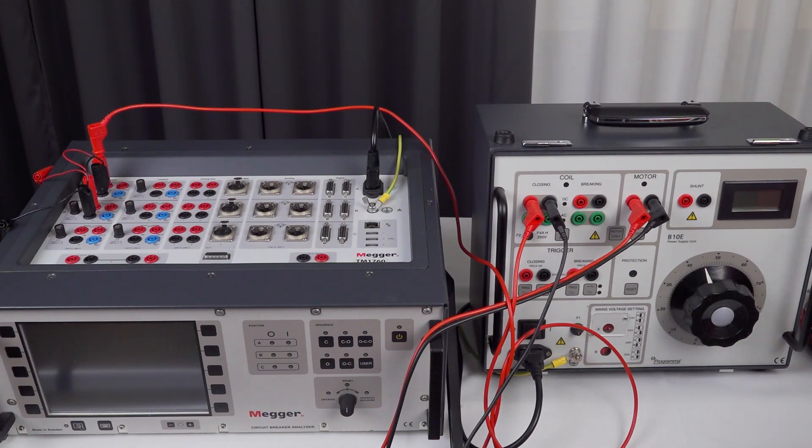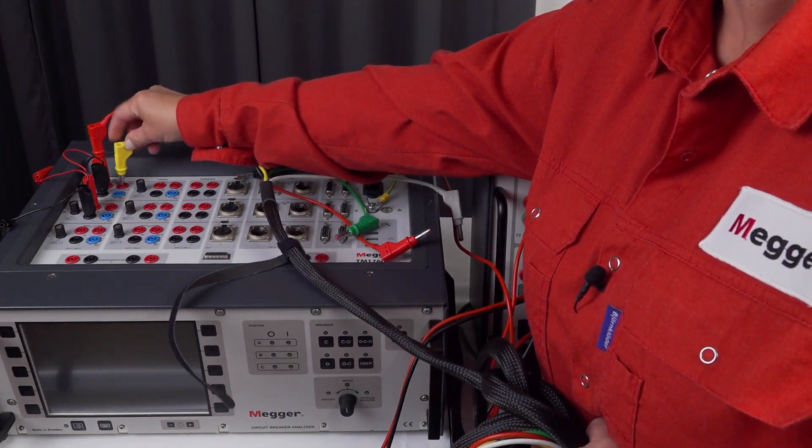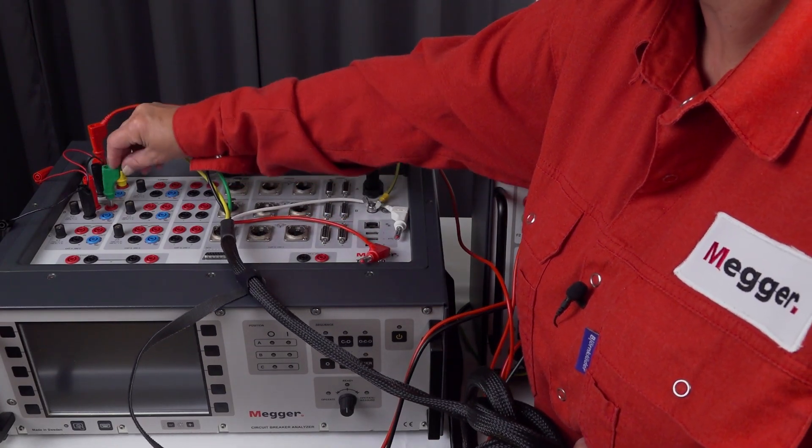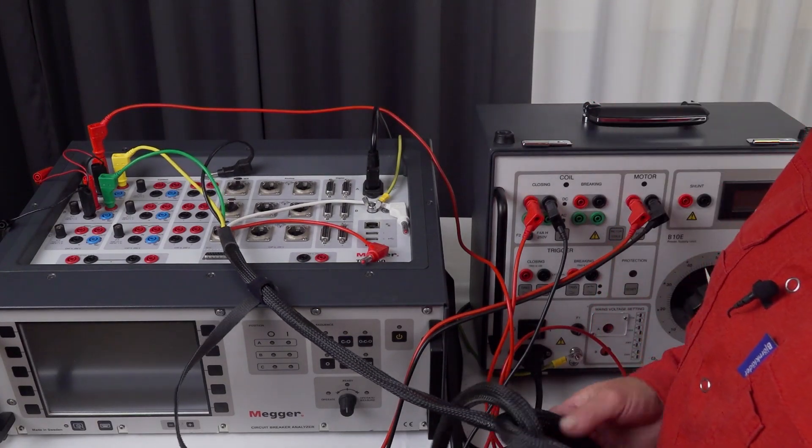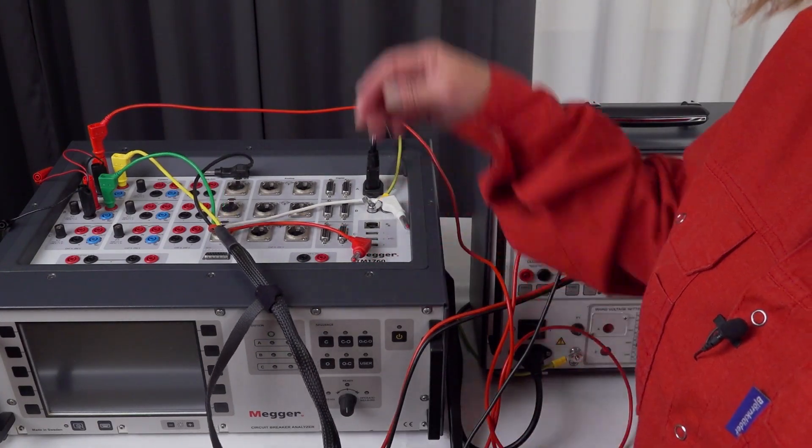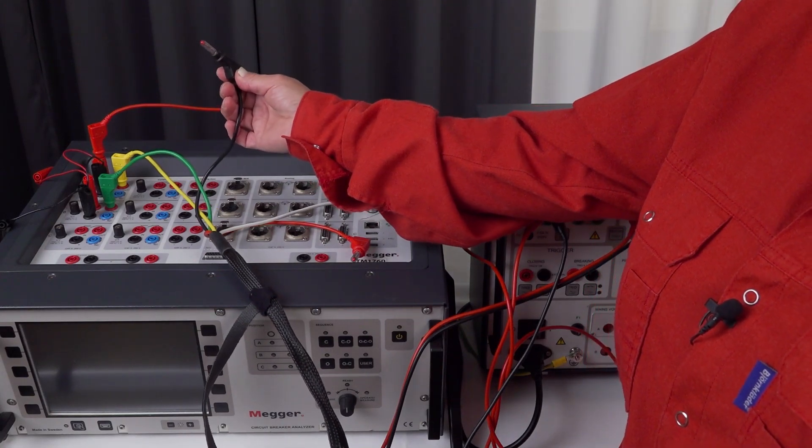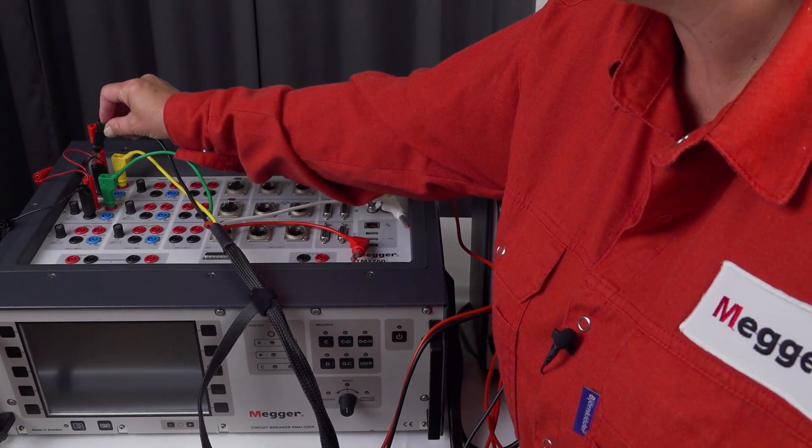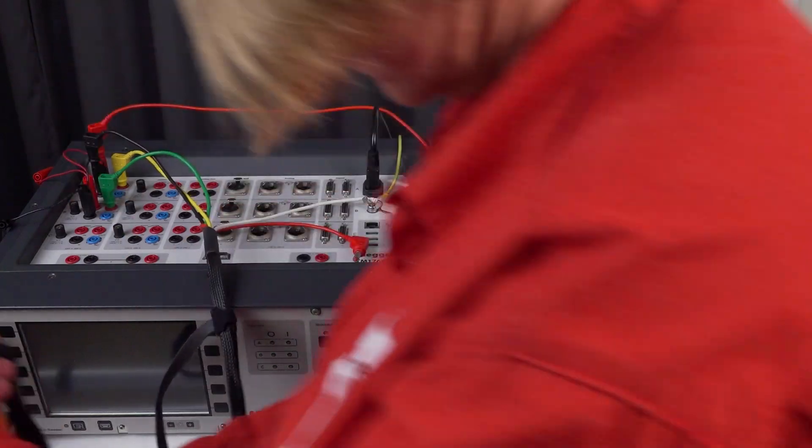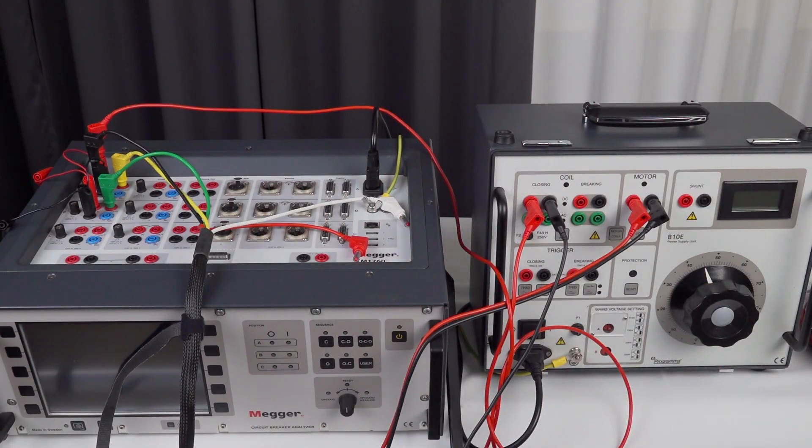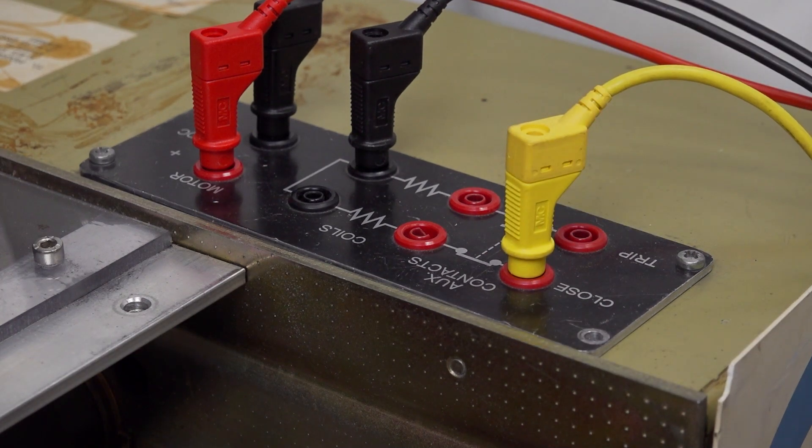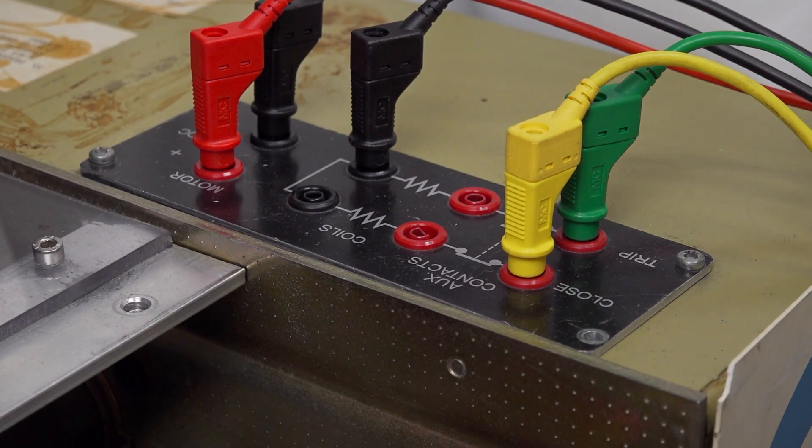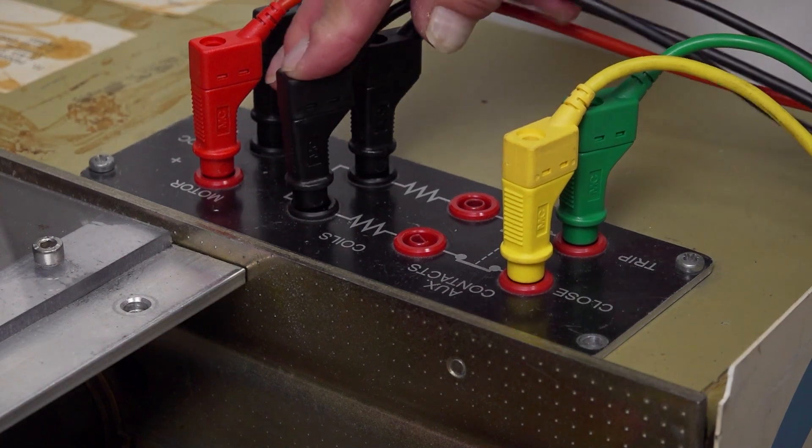I have the close and the open on the instrument and I also need to connect the minus because I want the minus on the circuit breaker to meet the pulse. I connect close on the circuit breaker and open on the circuit breaker and I also connect the minus.